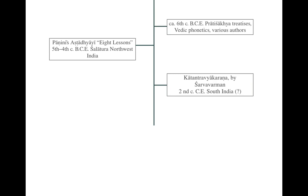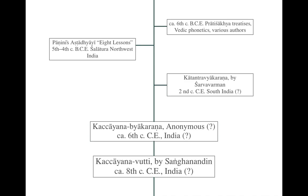Most importantly, we have the Katantra Vyakarana, ascribed to a Brahmin called Sharva Brahman, composed around the 2nd century common era — though dates and authorships are provisional. The Katantra Vyakarana is definitely one of the models of the Kaccayana, which was composed around the 6th century common era. The Katantra Vitti, a gloss or short commentary, explains the rules of the Katantra in a very clear manner.